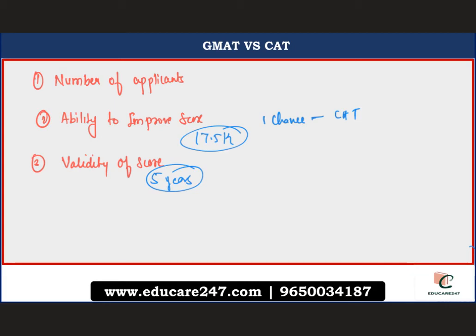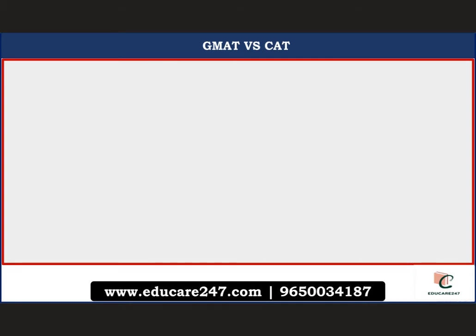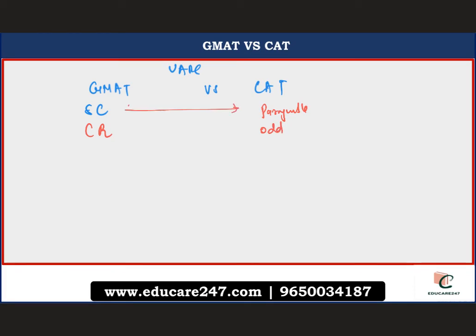When deciding between GMAT and CAT, you must consider the verbal section carefully, as GMAT's verbal is quite different from CAT's. In GMAT verbal, you have sentence correction and critical reasoning. In CAT verbal, you have para-jumbles and odd sentences. For GMAT, you also need to know grammar well, whereas in CAT you can crack the verbal section even without strong grammar. The most important part in CAT verbal is Reading Comprehension — 24 RC questions appear in CAT.